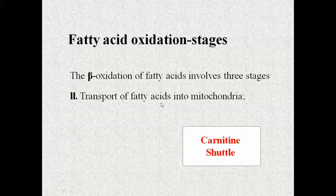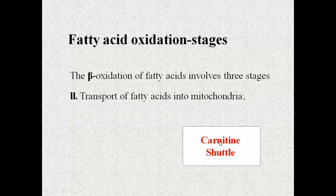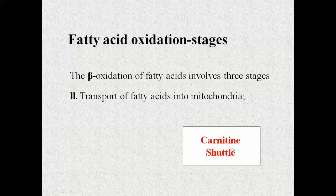The activated fatty acyl-CoA is converted — the acyl group is transferred to carnitine to form acyl-carnitine, which is then transported inside the mitochondrial matrix. Then acyl-carnitine is converted back to acyl-CoA inside the matrix, and the carnitine is released back in a cycle. There is a detailed sub-lecture on this mechanism, but we are just studying the overview.